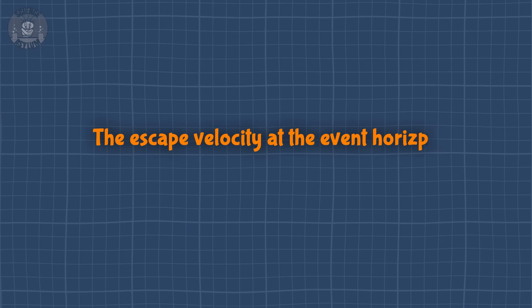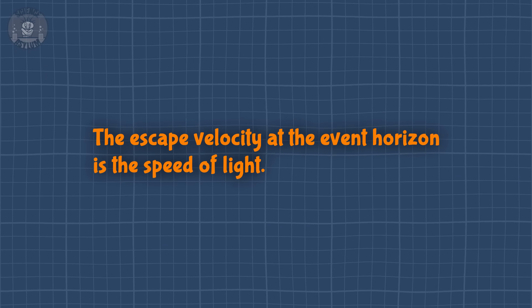We'll start with the one I hear the most. The escape velocity at the event horizon is the speed of light. Right. Wrong. That gives you the impression that if you could somehow travel faster than light, you could escape a black hole, which simply isn't true.